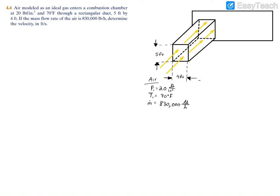Here we're working with air modeled as an ideal gas entering through a combustion chamber. We're given the pressure, temperature, and told that it's entering through a rectangular duct. We're given the width and height of the entrance as well as the mass flow rate in pounds per hour, and we have to find the velocity in feet per second. The schematic shows a four-foot by five-foot rectangular duct entrance leading into the combustion chamber, with air at 20 psi, 70°F, and a mass flow rate of 830,000 pounds per hour.